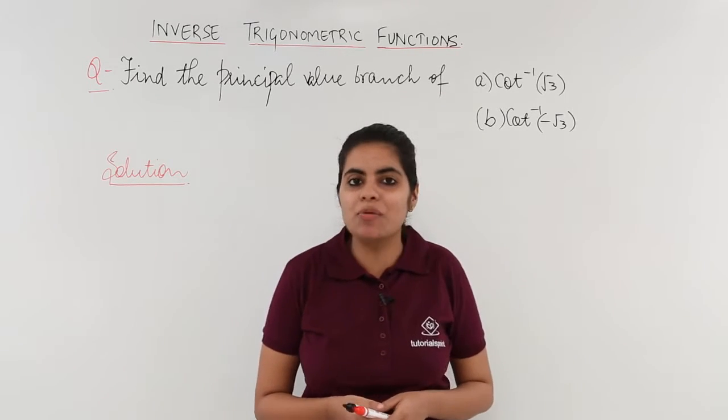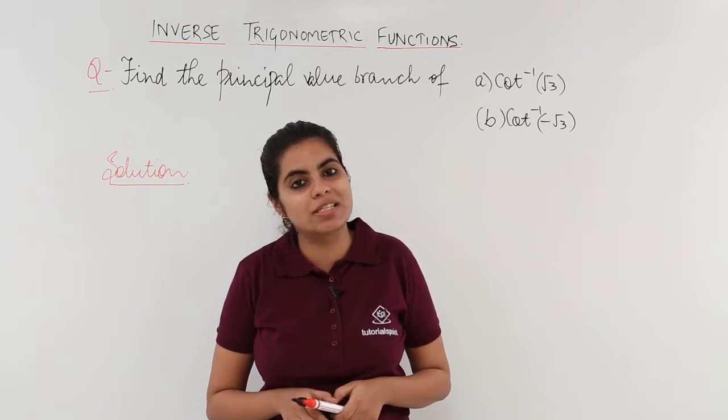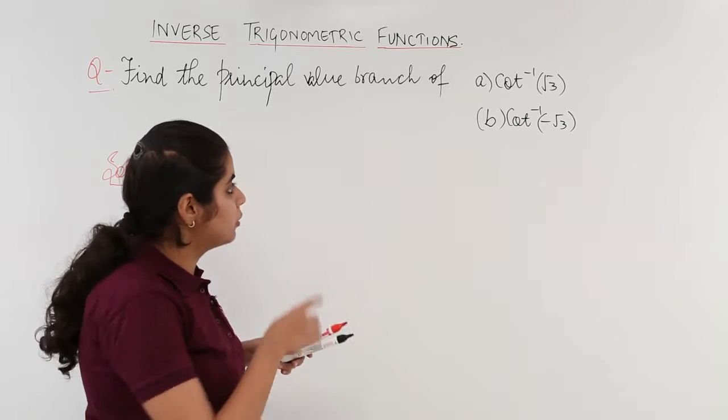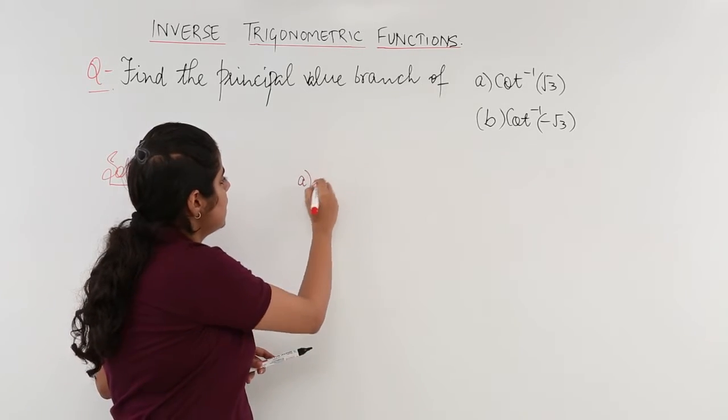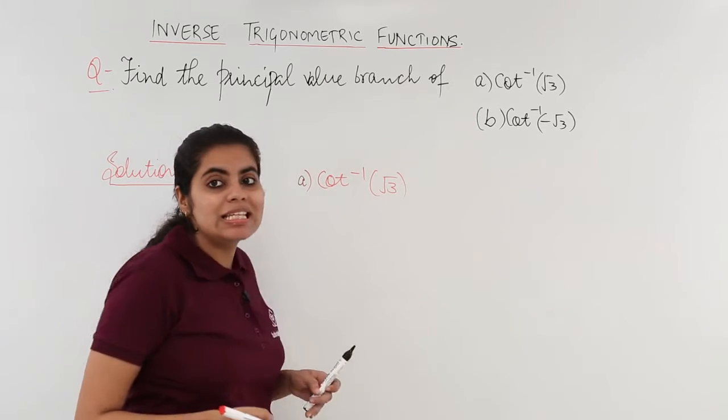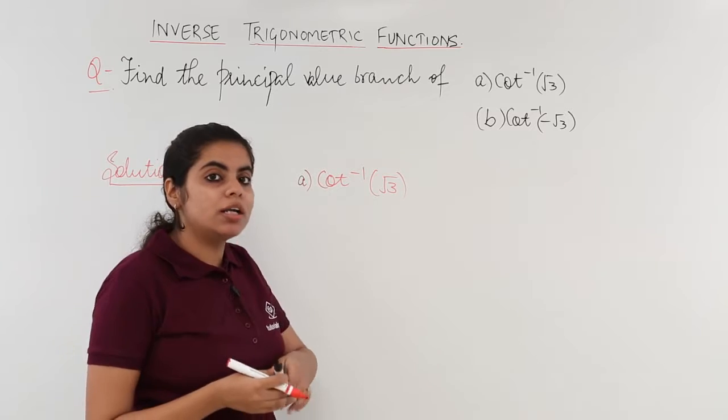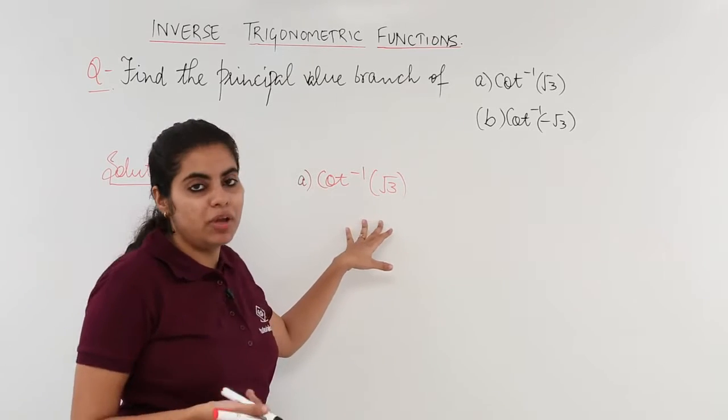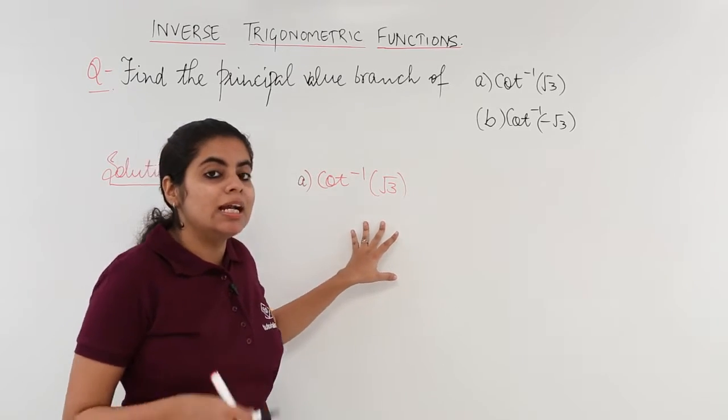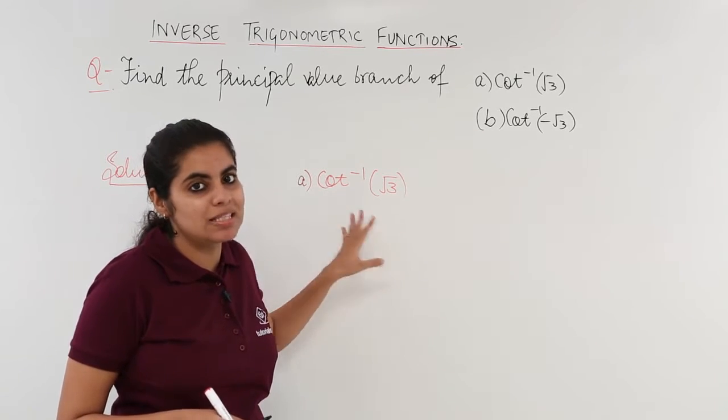Let's see how to solve the question of principal value branch based on cot inverse x. Now cot inverse, the first part is root 3. When is the value root 3? Root 3 means the cot value is root 3 when the tan value is 1 upon root 3. Tan is 1 upon root 3 at 30 degrees which is π by 6.